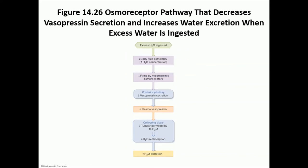If someone drinks too much water, that decreases body fluid osmolarity. Osmoreceptors in the hypothalamus detect this and decrease vasopressin secretion by the posterior pituitary. With low vasopressin, the aquaporins in the collecting tubules are hidden, decreasing tubular permeability to water. This decreases water reabsorption and increases water excretion, producing diluted urine.